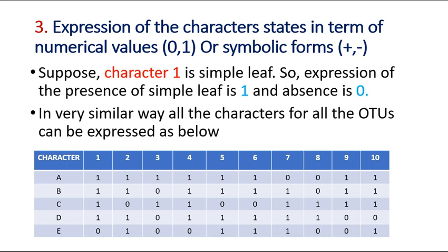All characters for all OTUs can be expressed in a tabular form using the binary code system. For example, for OTU A, characters 1 through 6 and 9 and 10 are present, represented by 1, while characters 7 and 8 are absent, represented by 0. Similarly for OTU B, character 1 and 2 are present, character 3 is absent, character 4 is present, and so on. All characters can be represented in the form of 0 and 1.